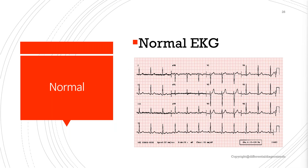Let's take the example of this normal EKG and apply what we just learned. The first thing we have to see is rate. If we take the example of this QRS complex — 300, 150, 100, 75 — I would say it is around 60 beats per minute.